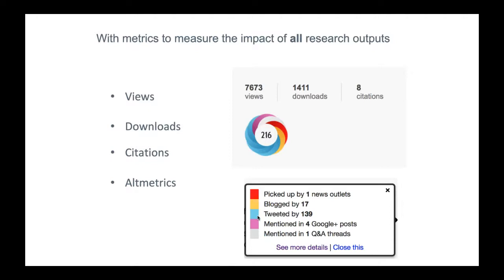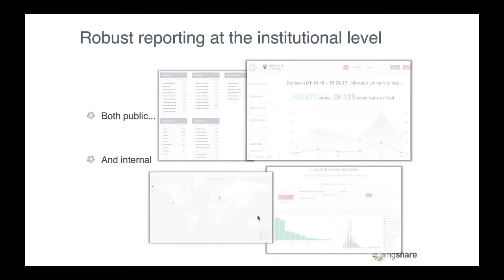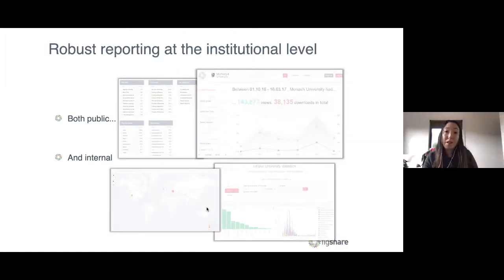With reporting, you can investigate where in the world people are actually finding the content and how they're finding it — is it through their university site, their Google browser, their phone, Twitter? It could be a multitude of ways people are trying to find content and how they're reusing that data as well.